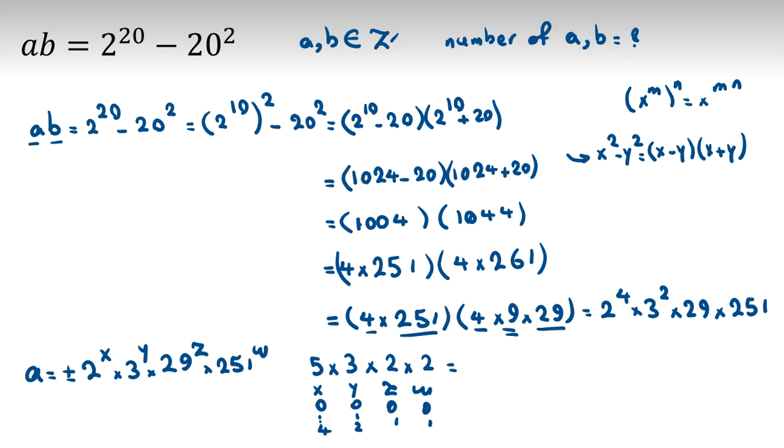It will be 5 times 3 times 2 times 2. 5 times 3 is 15. 15 times 4 is 60. And the answer, because we can select plus, both of them positive, both of them negative, for plus minus 2, with the other 60, it will be 120. We have 120 good answers for A and B.